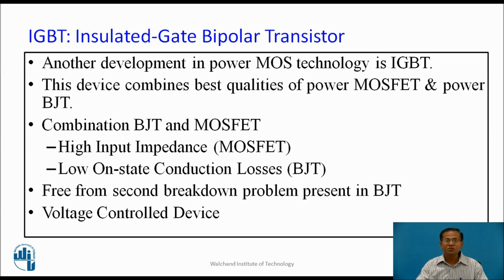IGBT stands for Insulated Gate Bipolar Transistor. It is another development in the PowerMOS technology. This device combines the best qualities of Power MOSFET and Power BJT. MOSFET is a voltage control device with very high input impedance, while Power BJT is a current control device with low input impedance but less onset drop. IGBT utilizes both features — it has high input impedance like MOSFET and low onset conduction losses like BJT.